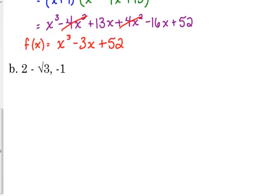Let's look at one that has a square root in it. Let's look at one that has a radical. So, 2 minus the square root of 3 and negative 1 are the two given roots. Radicals also come in pairs, so that means 2 plus the square root of 3 is our third root. So, let's write our equation.